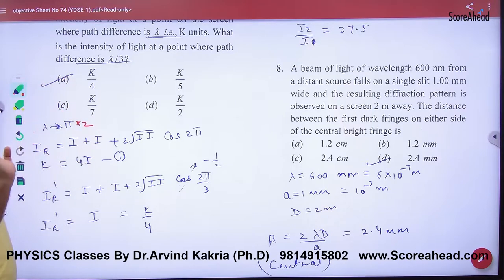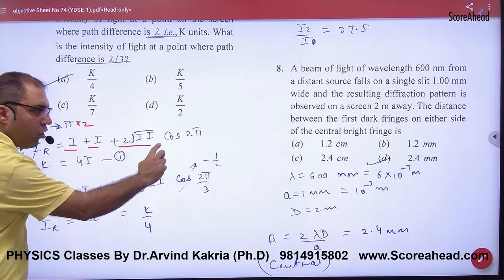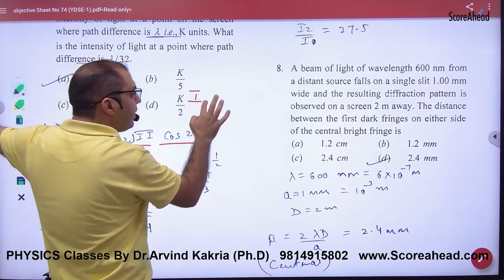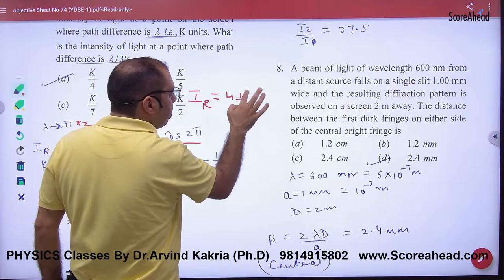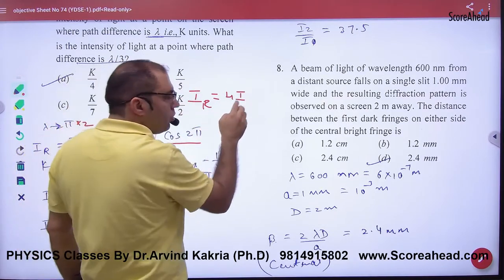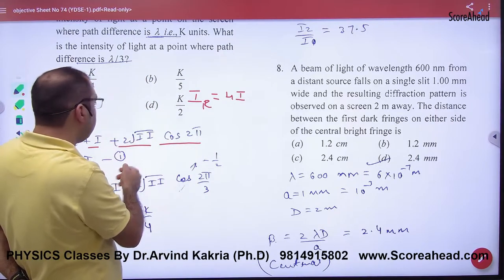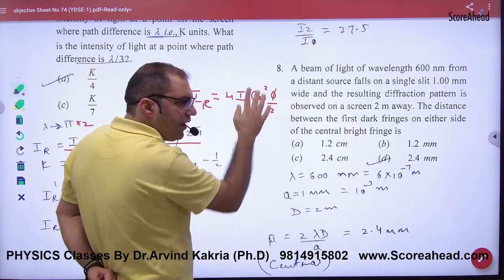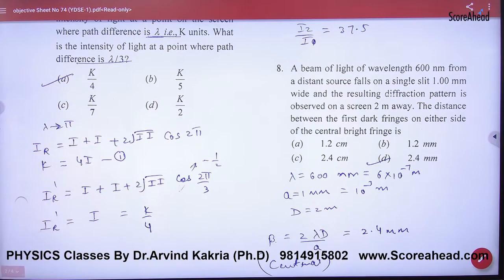So what is the resultant intensity formula? Lambda corresponds to 2pi. Resultant intensity i plus i plus 2ii cos of 2pi. Or if you don't use this formula, no problem. Use 4 into i0, 4i0 into cos squared phi by 2. So obviously, if you put 2pi, then what will be the answer exactly? Same.